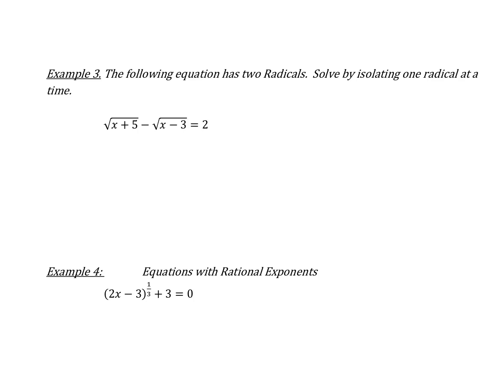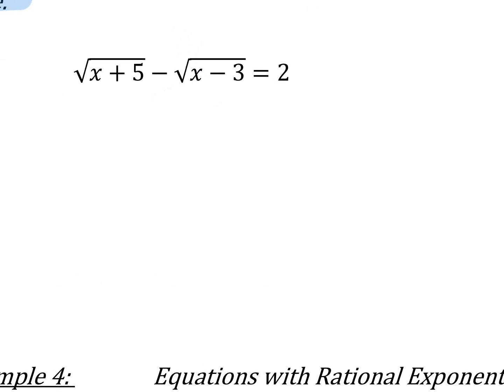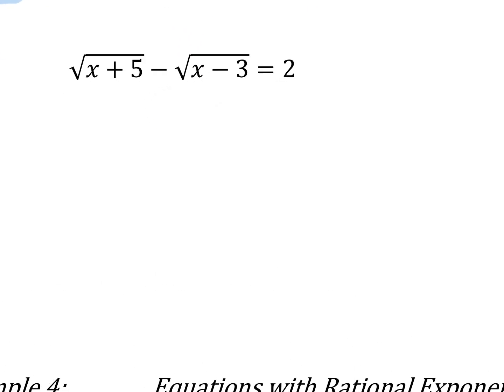Now we're going to take our solving of radical equations one step further. What happens when we have variables in two radicals? The key here is when we have two radicals, we're going to solve by isolating one radical at a time. We're going to just attack one square root at a time.